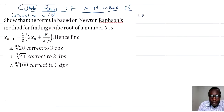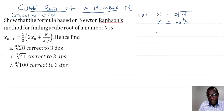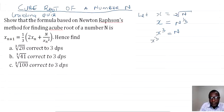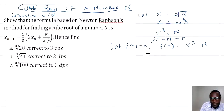Let x be equal to the cube root of a number capital N. So x is equal to N to the power 1 over 3. Cubing both sides, we have x³ = N, which gives x³ - N = 0. We let f(x) = 0, meaning f(x) = x³ - N.